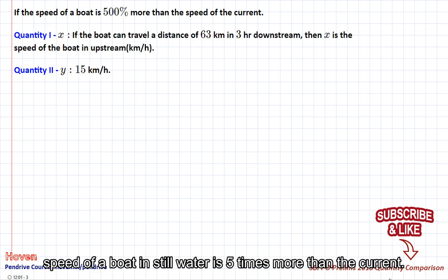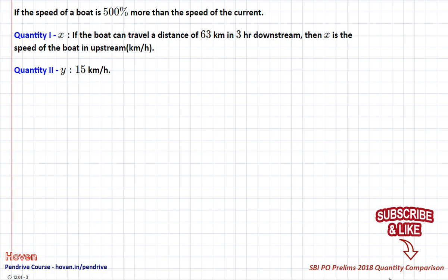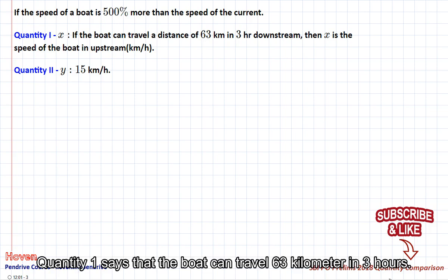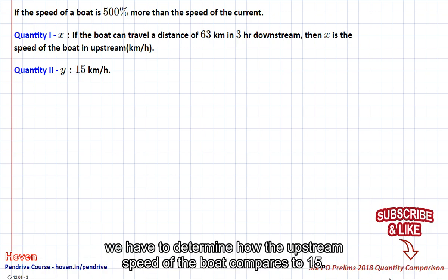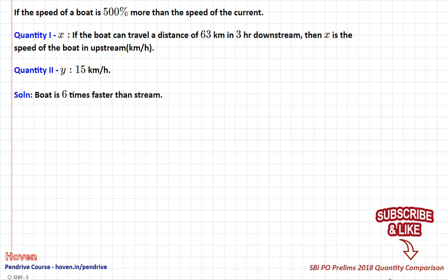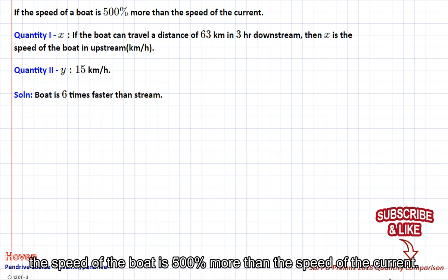Speed of a boat in still water is 5 times more than the current. Quantity 1 says that the boat can travel 63 km in 3 hours. We have to determine how the upstream speed of the boat compares to 15. The speed of the boat is 500% more than the speed of the current.